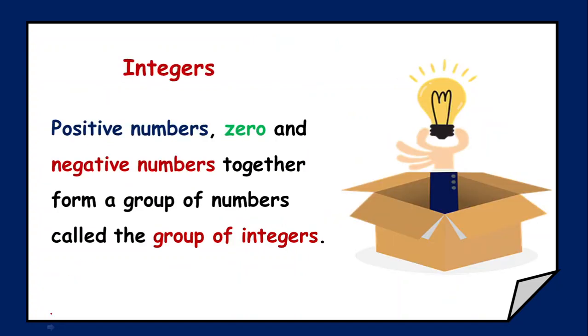Now let's see what is meant by integers. All positive numbers and negative numbers together with zero form the group of integers. In natural numbers we had only positive numbers from one; then whole numbers added zero. Integers include all categories — negative numbers, positive numbers, and zero together. I hope everyone is clear with today's concept; if there is any query, please drop it in the comment section. Thank you.